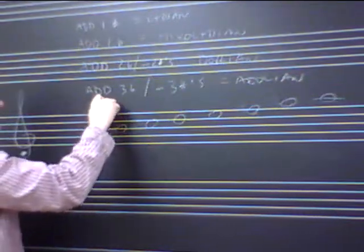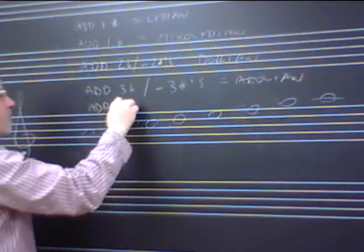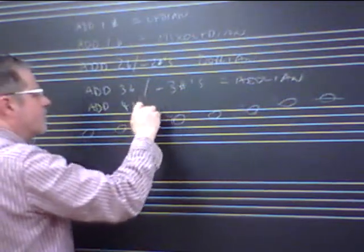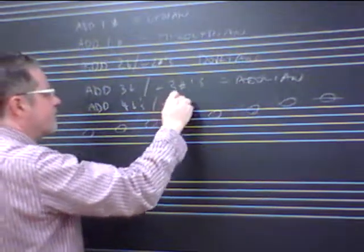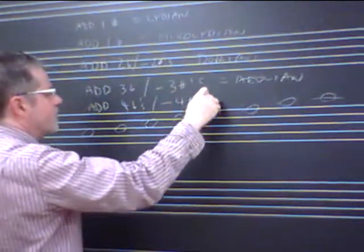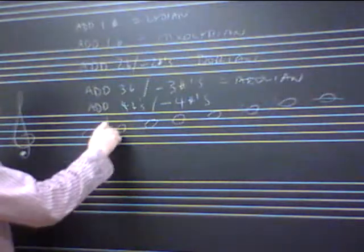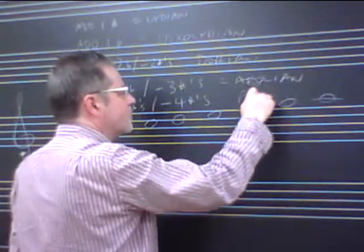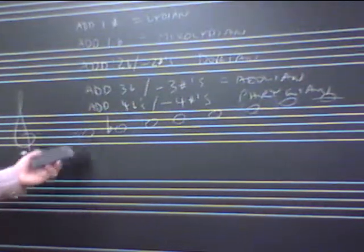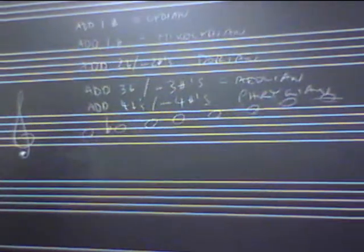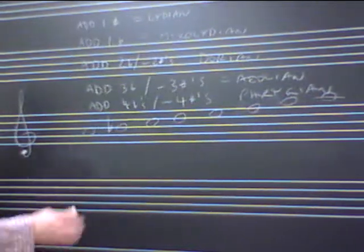If I add four flats or subtract four sharps, I'm going to end up with A Phrygian. All right, by the way, that just looks like an F major scale, but it's from the third of the F scale to the next third of the F scale.